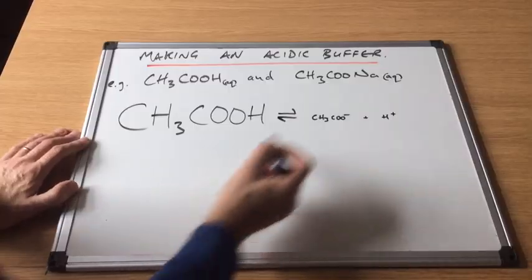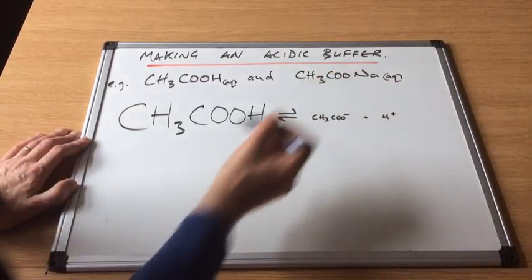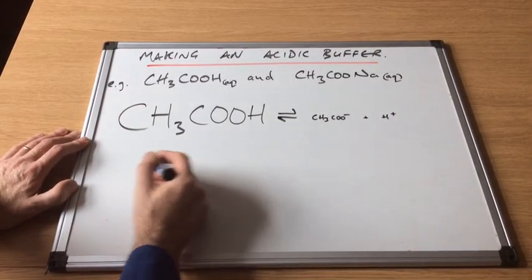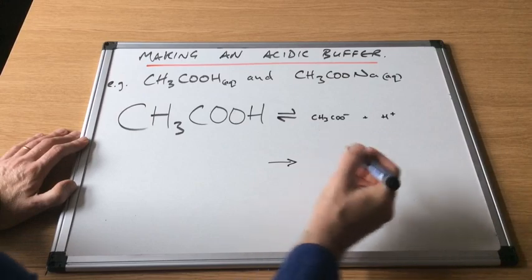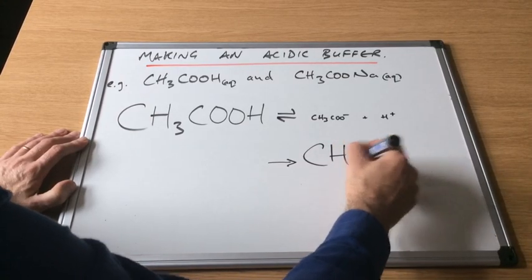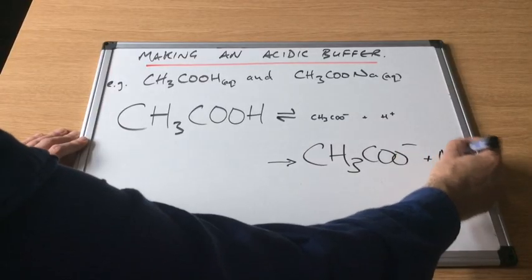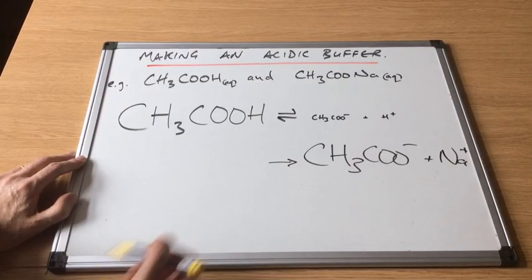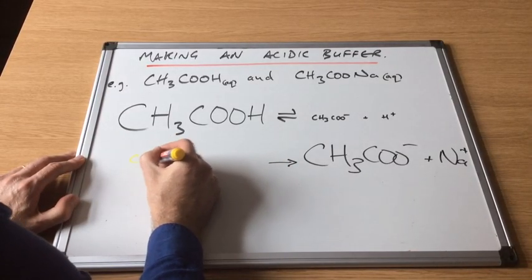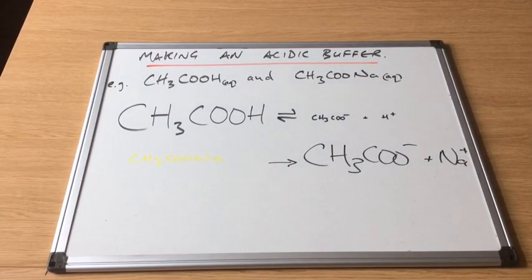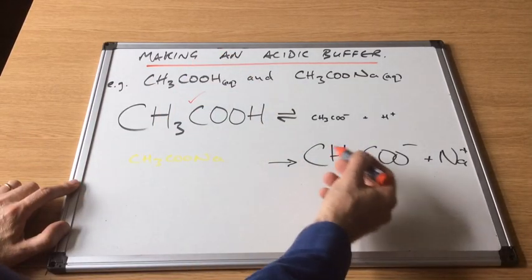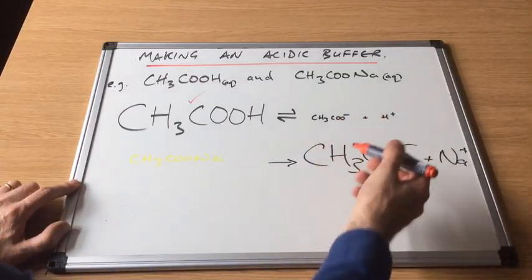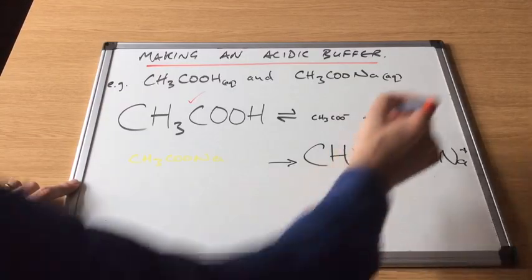The salt, sodium ethanoate, will completely dissociate because it's an ionic salt — ionic salts completely dissolve in water. So we wouldn't have any sodium ethanoate left; it completely dissociates into a large amount of CH₃COO⁻ ions and some Na⁺ ions. The essential ingredients in the buffer are the weak acid, the ethanoate ion from the salt, and the H⁺ ion.